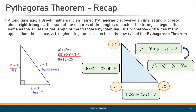In this case, 3 squared plus 4 squared equals 5 squared. If you convert that into coordinates, the distance from (2,6) to (5,2) is the square root of (2−5)² + (6−2)², which gives us 5 — the length of the hypotenuse. Similarly, the distance from (2,2) to (2,6) is |2−2| + |2−6|, which is 4.